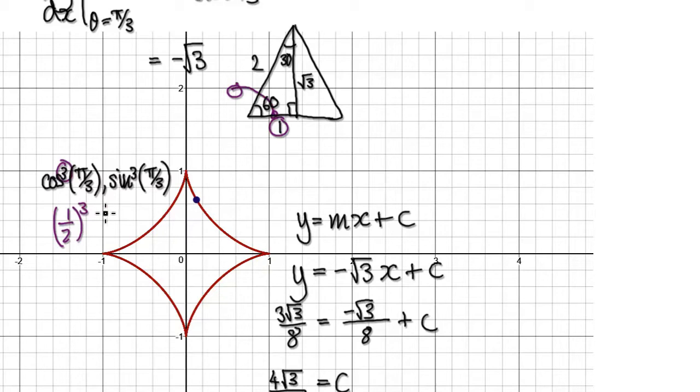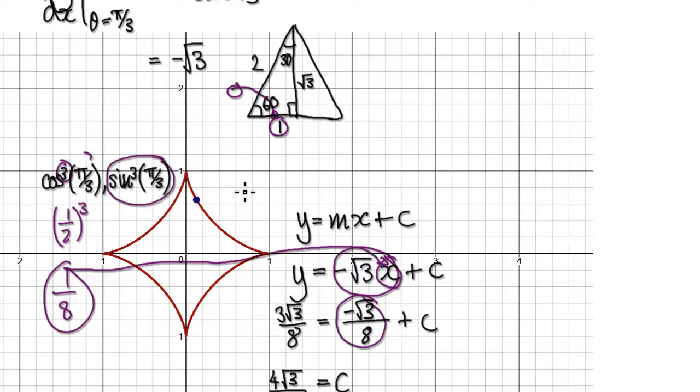And then we've got a cubed here, so that would be 1 over 8. We would put this into the x. 1 over 8, this thing here would then give us this.